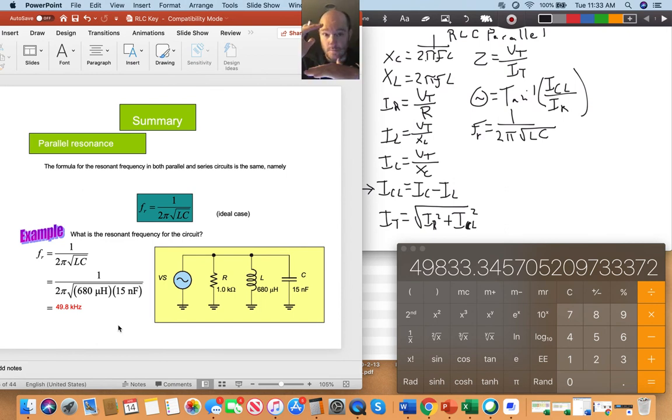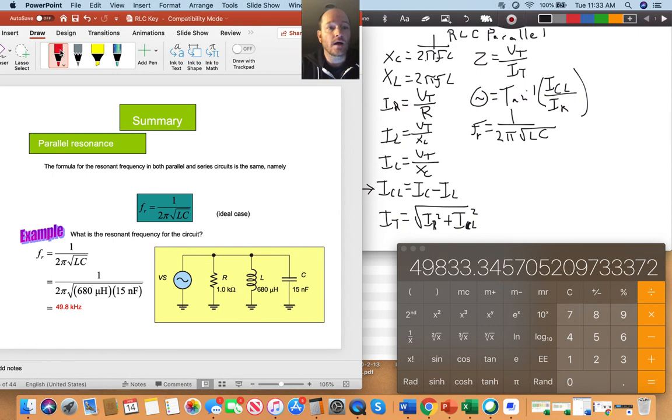So what does that mean? What does that number give us? That gives us at this time, that the current here and the current here essentially subtract each other out. So IC will subtract IL and they will have that same value. So our I total is equal to our current through our resistor at resonant frequency. And just like that, our power factor is still very high. And I'm going to make another video on power factor, getting a little more explanation about what the heck fire that is.